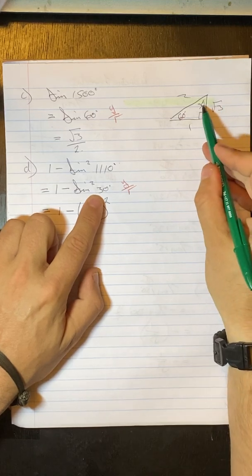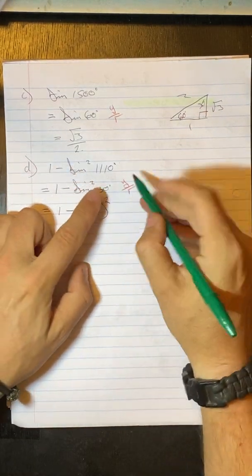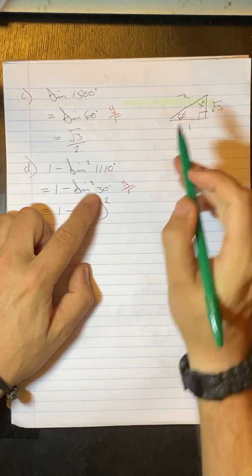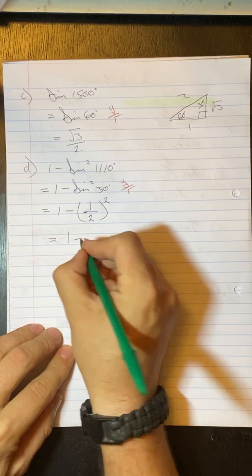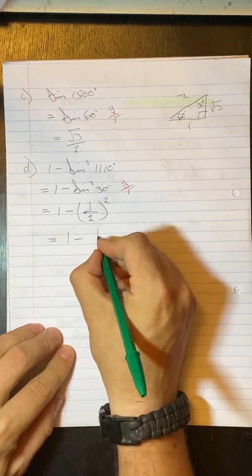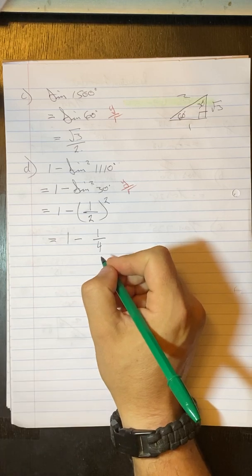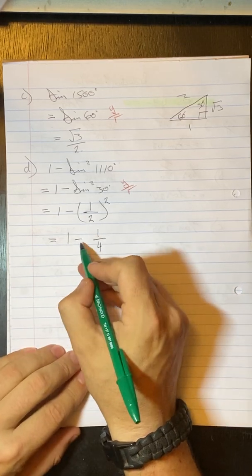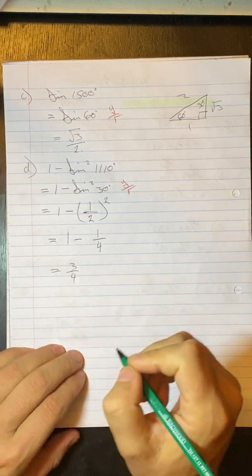So, y for 30 is opposite. So opposite 30 is 1. And r is your hypotenuse, which is 2. So we get here 1 minus 1 squared is 1 over 2 squared is 4. So 1 minus a quarter gives us 3 quarters.